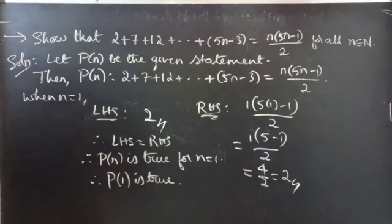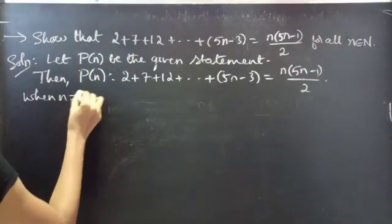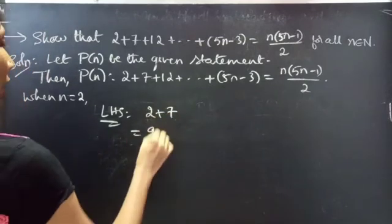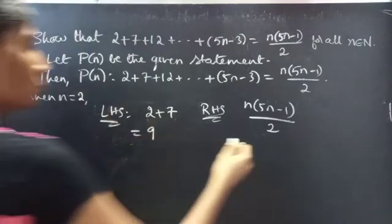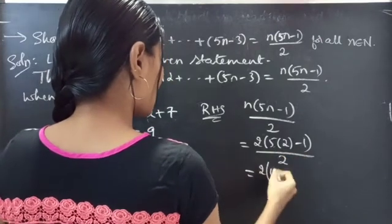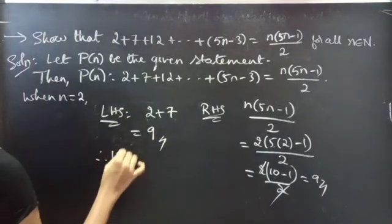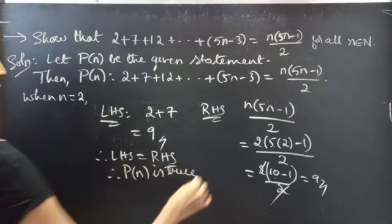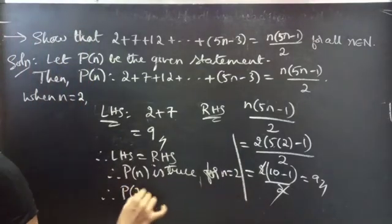Likewise, for n equals 2, we take the first two terms from LHS: 2 plus 7 equals 9. Now coming to RHS, substitute n equals 2: 2 times (5 times 2 minus 1) by 2. Cancelling 2, we get 10 minus 1, which is 9. So LHS equals RHS, therefore P(n) is true for n equals 2, and P(2) is true.